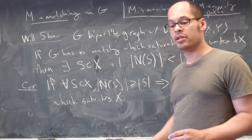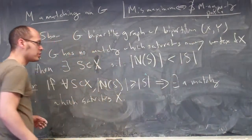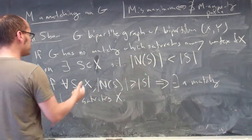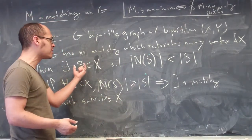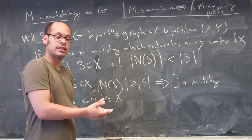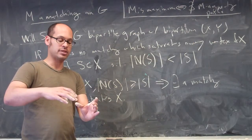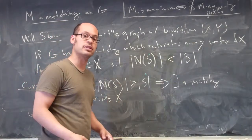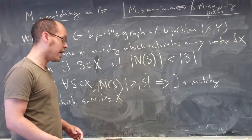This is a nice criterion. It gives us a way in which we can be guaranteed to solve the scheduling problem. If X represents the tasks, then as long as for each collection of tasks the number of people who can do those tasks is at least equal to the number of tasks — if that's true for every subset — then the assignment problem has a solution.